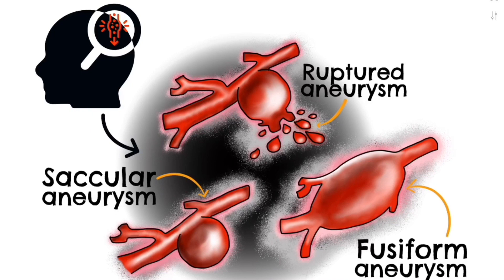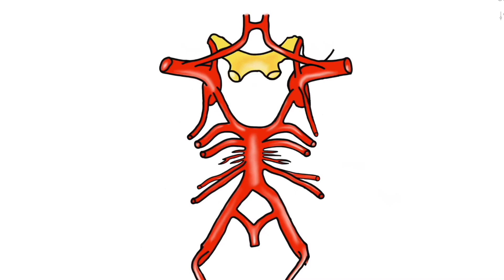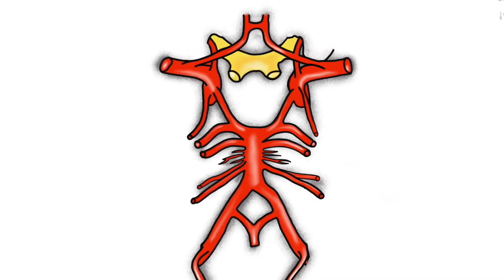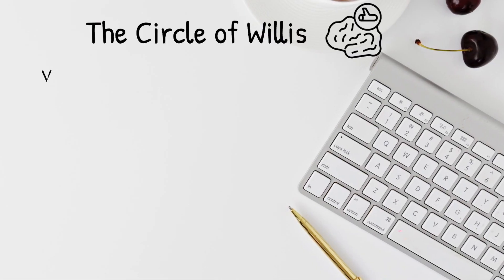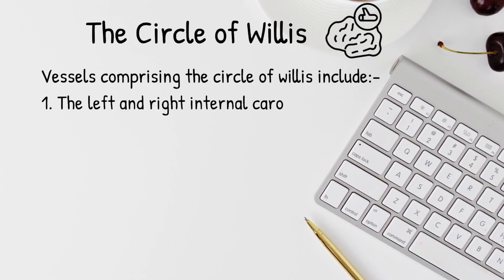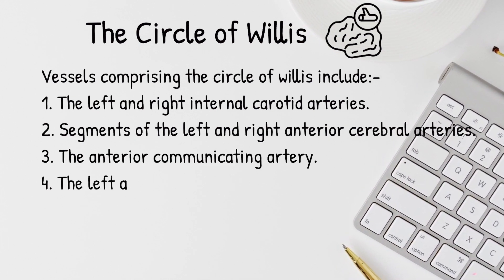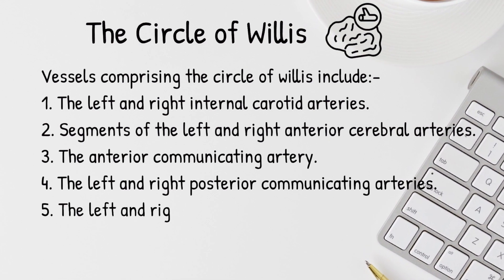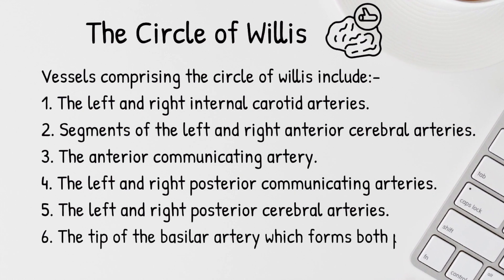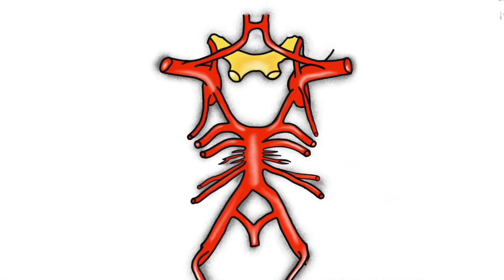In order to better understand cerebral aneurysms, let's have a look at the vasculature of the brain. As you can see in the image here, there is a circular pattern to the arterial supply of the cerebrum, and that is why the system of arteries is referred to as the circle of Willis. The circle of Willis is comprised of many different arteries: the left and right internal carotid arteries, the left and right anterior cerebral arteries, the anterior communicating artery, the left and right posterior communicating arteries, the left and right posterior cerebral arteries, and the tip of the basilar artery.